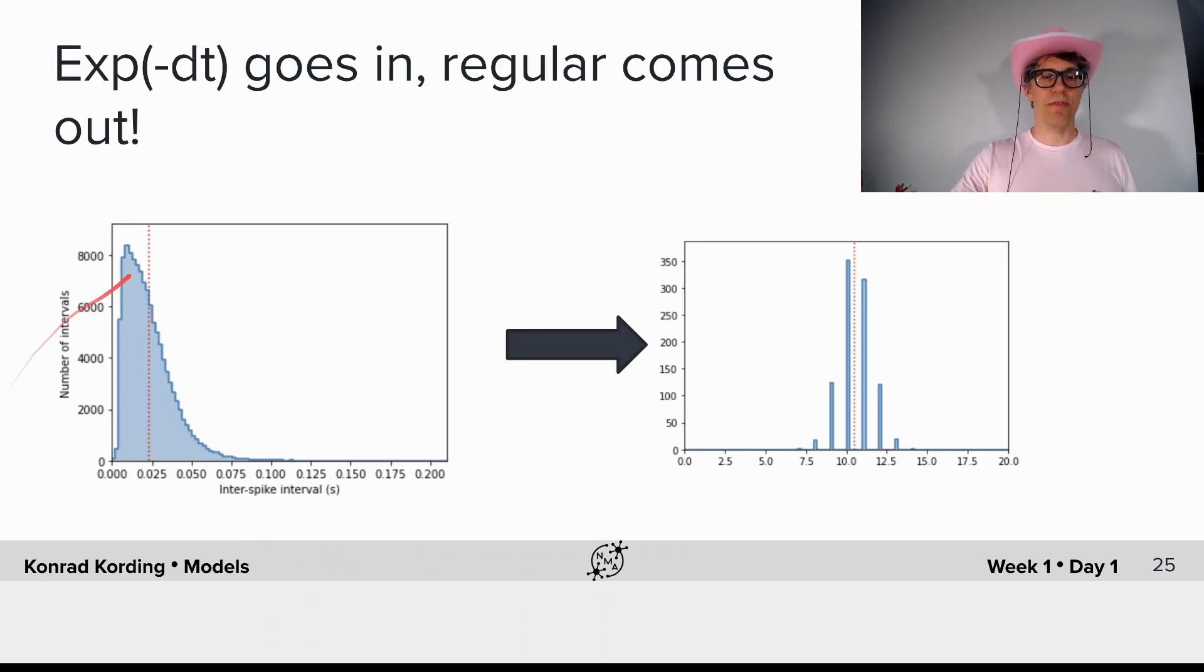What we have is neurons that have exponential inter-spike intervals, or at least in good approximation, but the output of those neurons doesn't look exponential at all. It looks like a small Gaussian within a very narrow range.